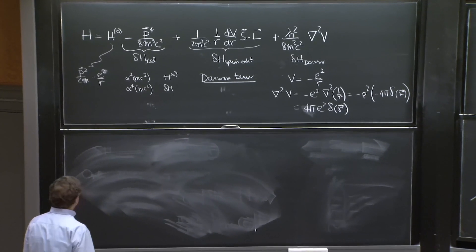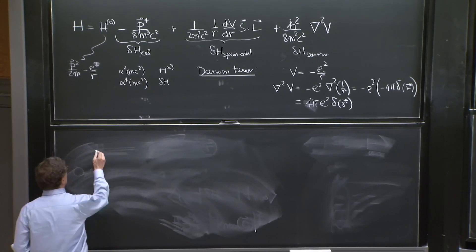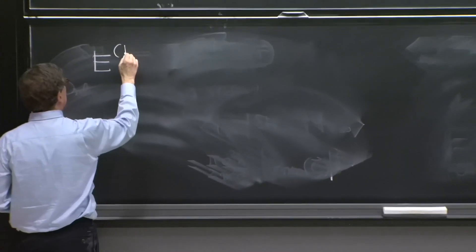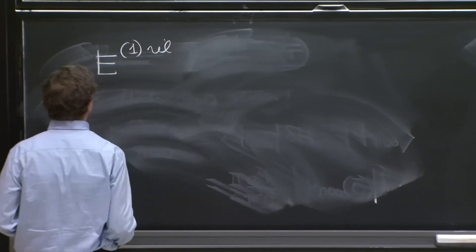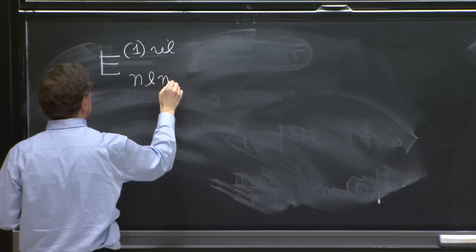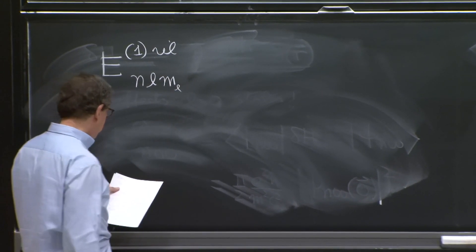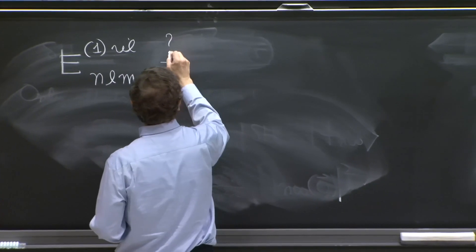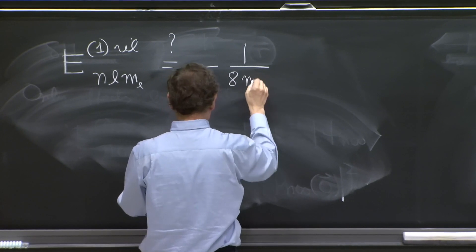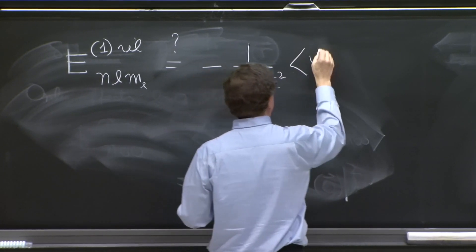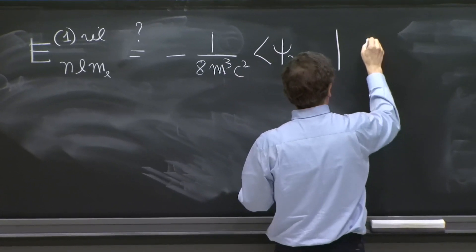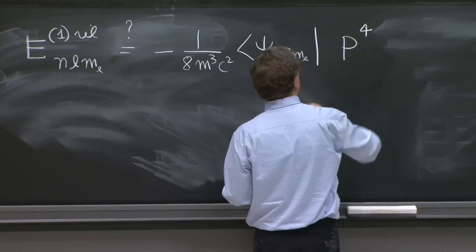So let's see what we can do. This is the relativistic correction, the minus p squared. So for the relativistic correction, we're going to get first order correction, relativistic, of the levels nlml, let's put the question mark, minus 1 over 8m cubed c squared, psi nlml, p to the fourth.